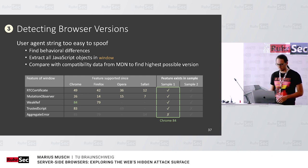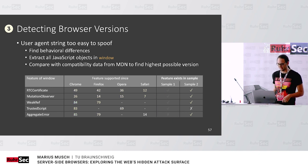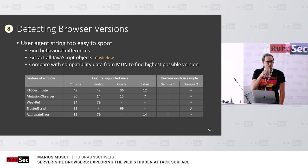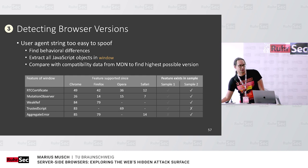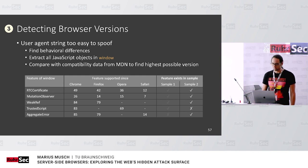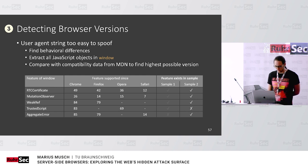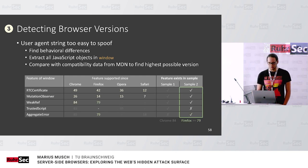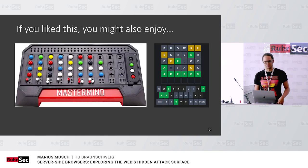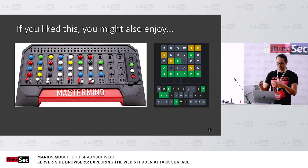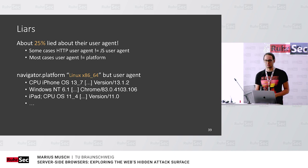You can try this yourself with another sample. As a quick audience exercise — they have all the features except TrustedScript — the answer is Firefox 79 or higher. This technique was necessary because it turns out a lot of these browsers lied about their user agent. Some were obvious: the HTTP user agent header and navigator.userAgent said different things. Others had a user agent that didn't match the platform — claiming to be on iPhone but running on Linux. These were automated systems visiting us within seconds, so it's much more likely they wanted their headless Chrome to appear as an iPhone while running on a Linux server.